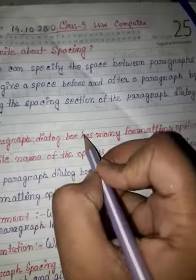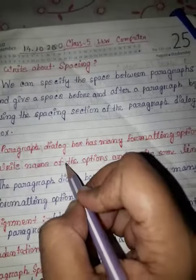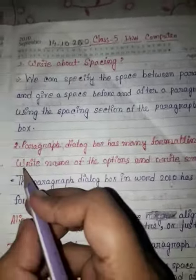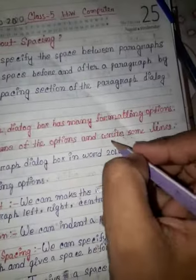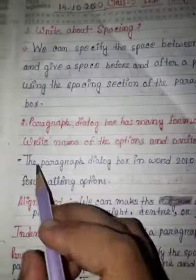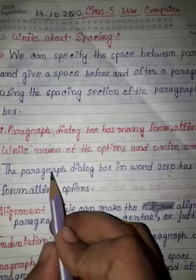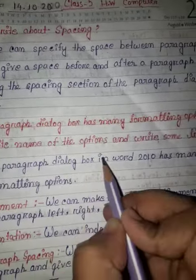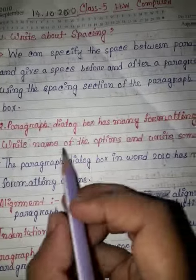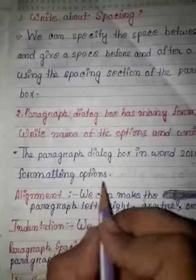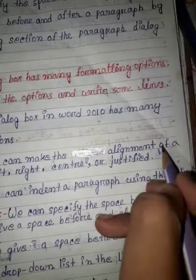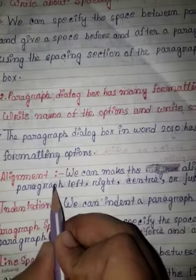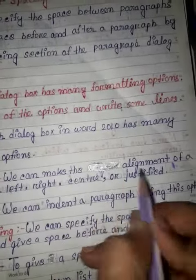The paragraph dialogue box has many formatting options. Write the name of the options and write some lines. The paragraph dialogue box in Word 2010 has many formatting options, such as alignment. We can make the alignment of a paragraph left, right, center, or justify.